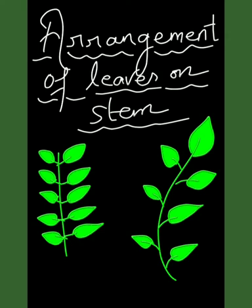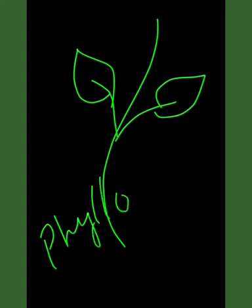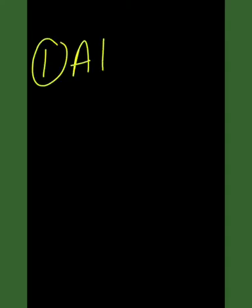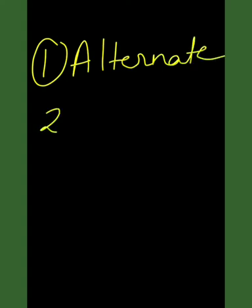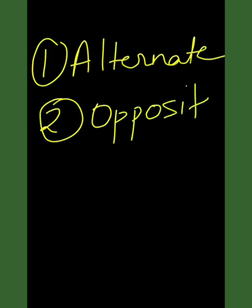Arrangement of leaves on stem is also called phyllotaxy. This arrangement of leaves may be alternate, opposite, or whorled.